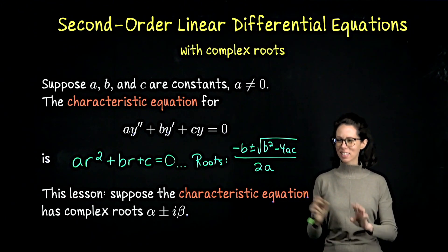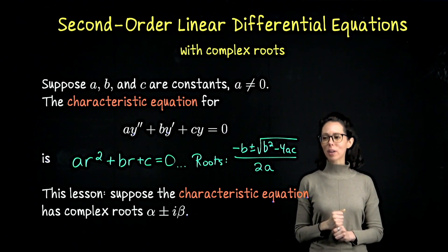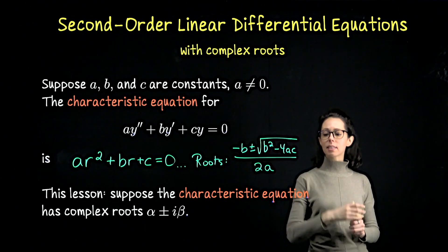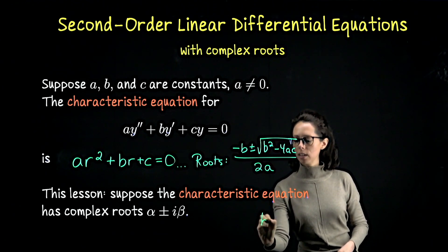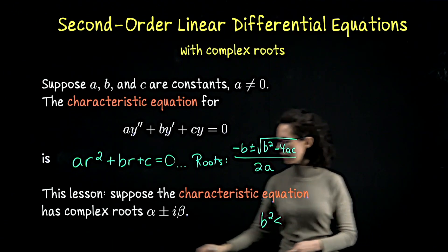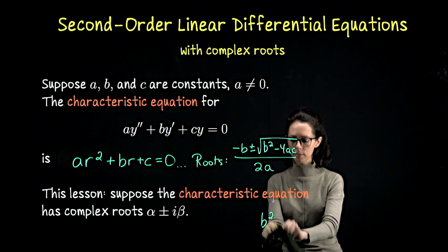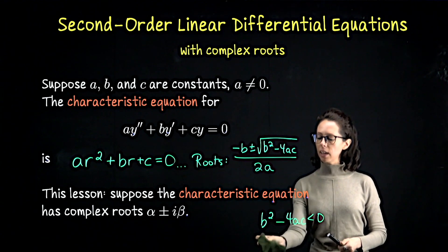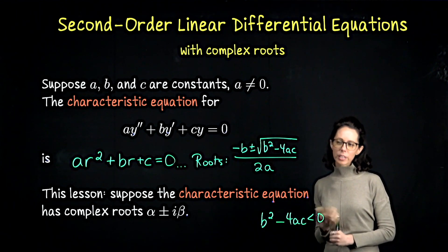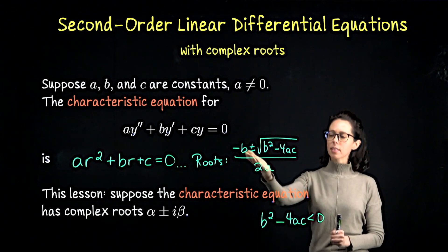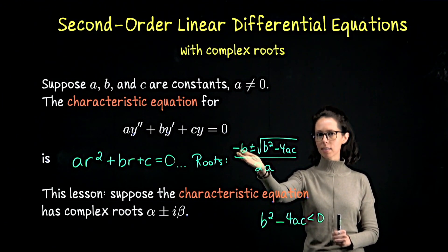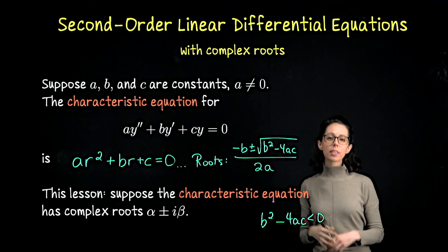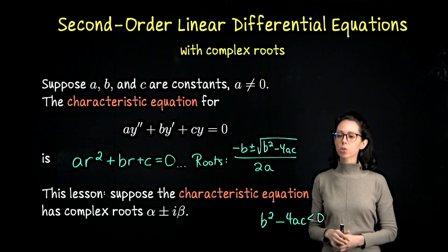In this final case-by-case look at the characteristic equation, we are going to consider that the discriminant is less than zero — that is, b² minus 4ac < 0. Our discussion will assume the leading term is non-zero, since we already looked at the pure imaginary case. However, everything done in this video could also handle the situation where b is zero, so this is the broader treatment of what happens when the discriminant is negative.